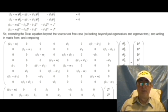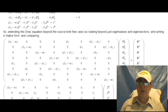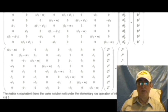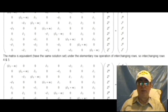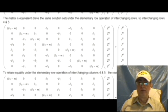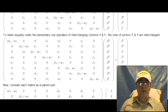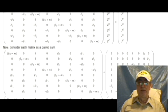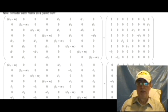Extending the Dirac equation beyond the source-sync free case, looking beyond just eigenvalues and eigenvectors, and writing in matrix form and comparing, then viewing each matrix as a paired sum, in this form the transformations are easy to see.